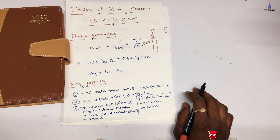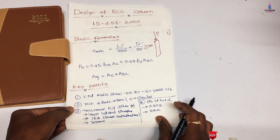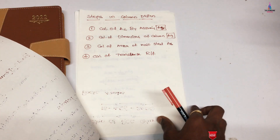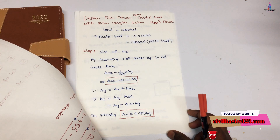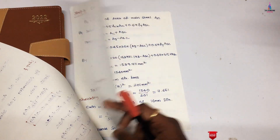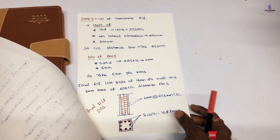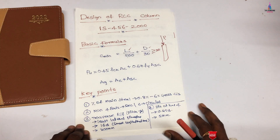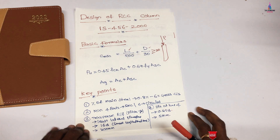In this video lecture I will explain the design of an RCC column as per IS 456:2000 code using the manual method. Initially I will explain the basic formulas involved in manual calculation and key points related to column design. Then I will explain the steps for column design and calculate the column reinforcement for a 1200 kN load case. Please watch the video completely so you can understand the concept.